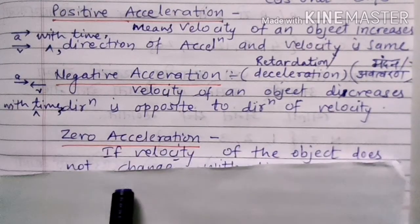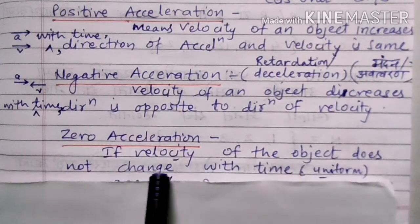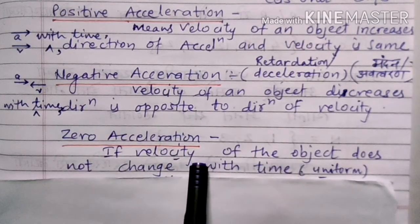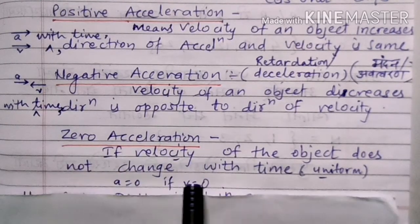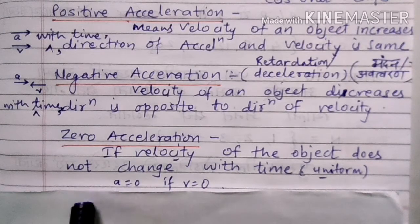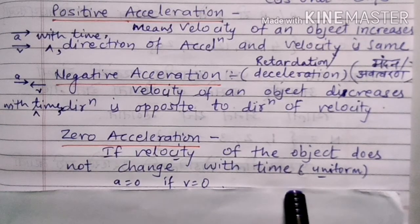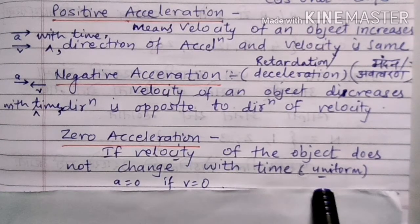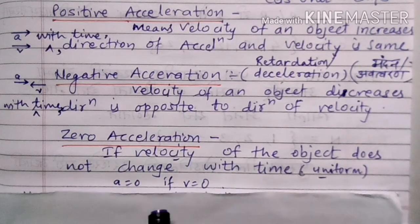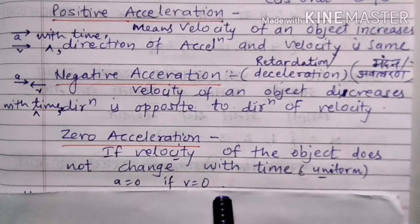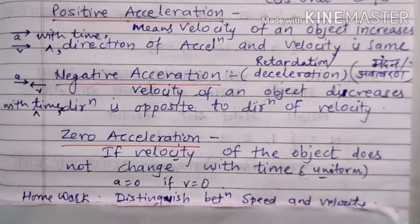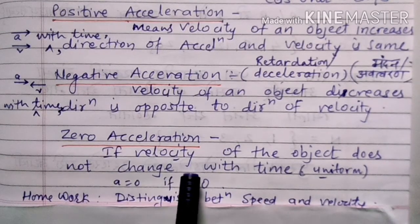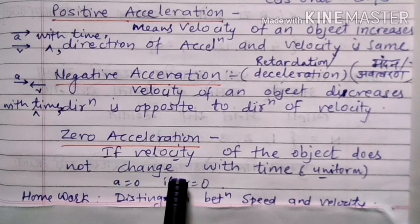The next one is zero acceleration. If the velocity of an object does not change with time — it is uniform — then if V equals zero, A is also zero, and it is known as zero acceleration. We can see the example on page 5.